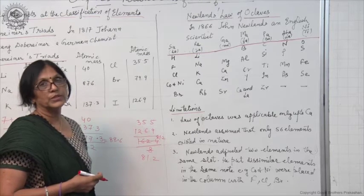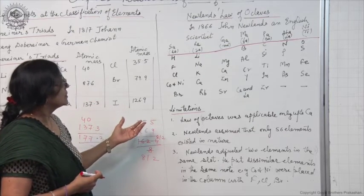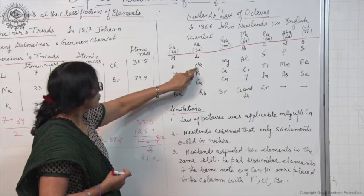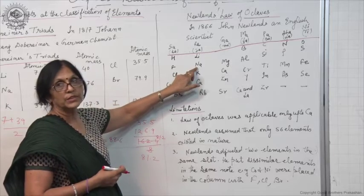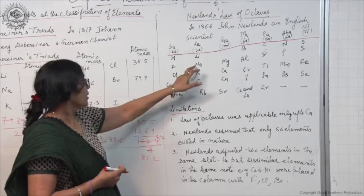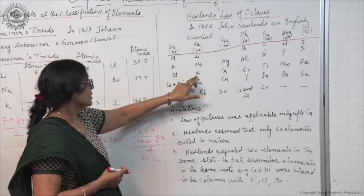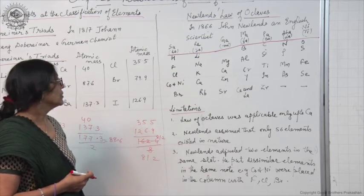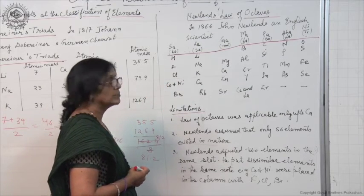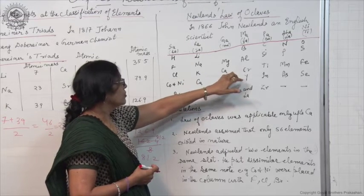He found that the properties of lithium — if we start with lithium, the properties of sodium, which is the eighth element, are similar to that of lithium. Similarly, properties of sodium are similar to that of potassium, so if sodium is the first element, potassium is the eighth element. Like this, he could arrange some of the elements, but only up to calcium.